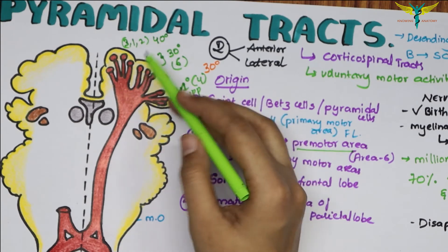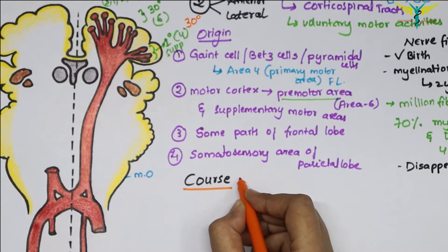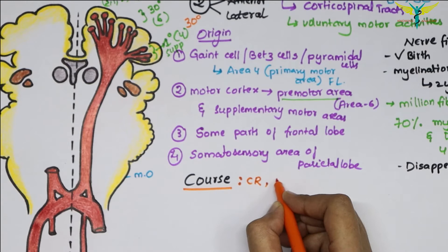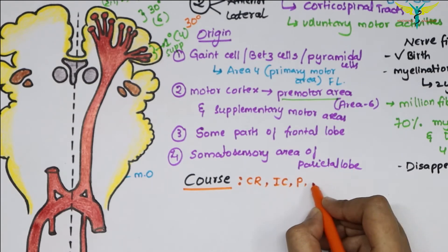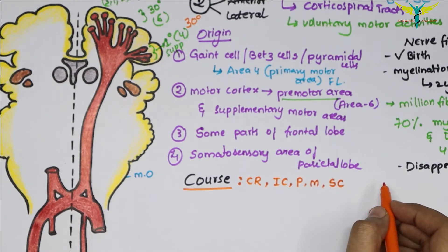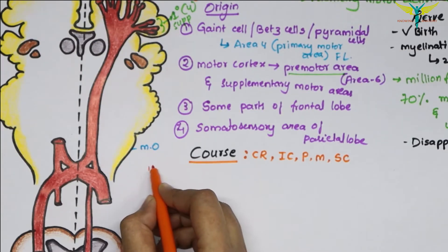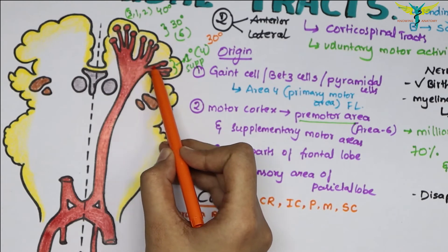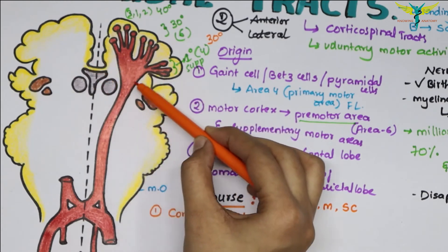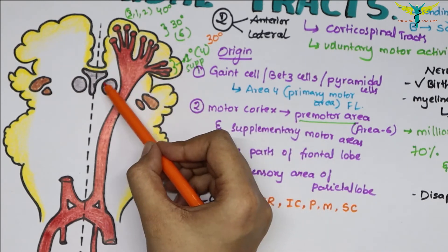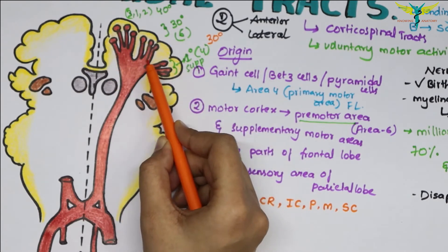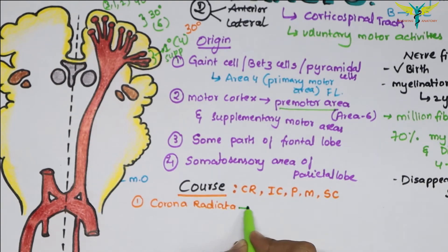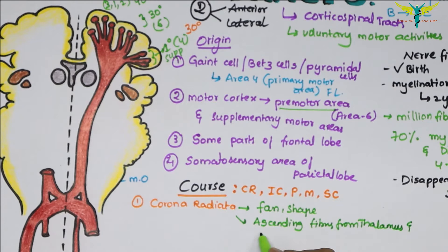All these fibers form the upper motor neurons for the motor pathway. Regarding the course — which is important — it goes from the corona radiata, then to the internal capsule, then through the pons, then to the medulla, and terminates in the spinal cord. After taking their origin, the nerve fibers run downwards in a diffuse manner through the white matter of the cerebral hemisphere and converge in a fan-like structure along with ascending fibers projecting from the thalamus to the cerebral cortex. This fan-like structure is called the corona radiata.